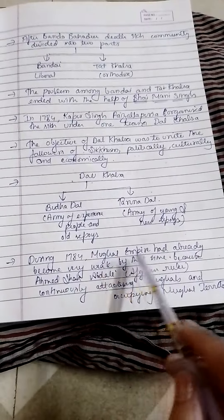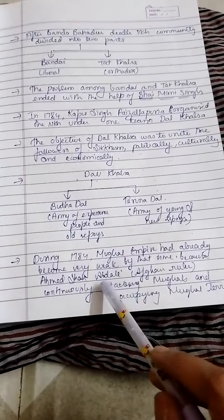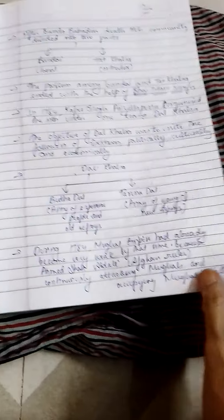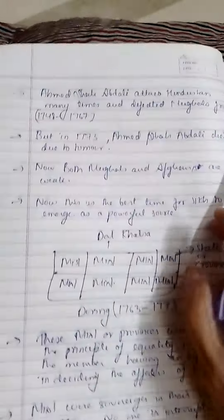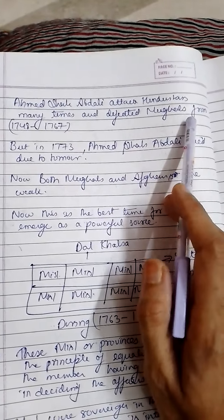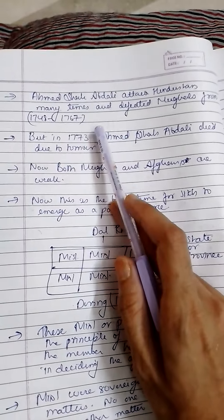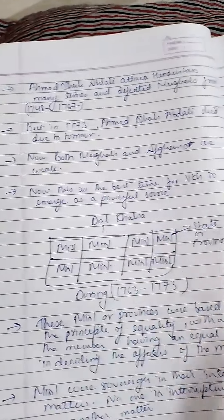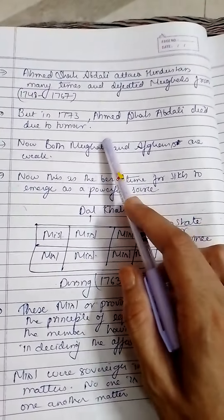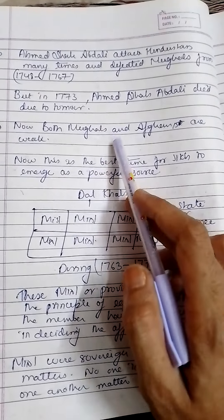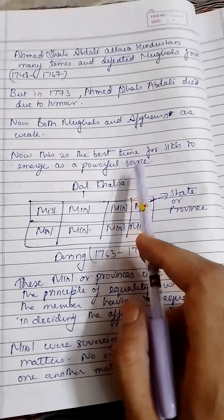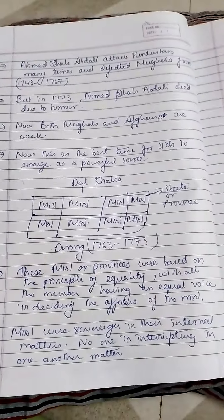Around 1784, the Mughal Empire was weak. Ahmad Shah Abdali, the Afghan ruler, continuously attacked the Mughals from 1748 to 1767. The Mughals were fighting on multiple fronts. In 1773, Ahmad Shah Abdali died. With both the Mughals and Afghans weakened, this was the best time for the Sikh community to emerge as a powerful force.